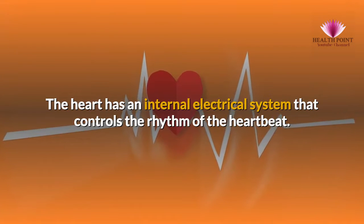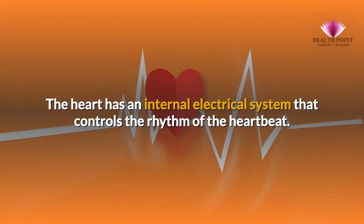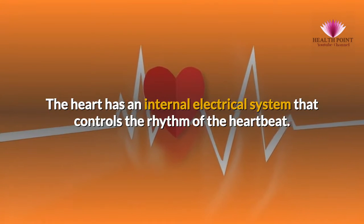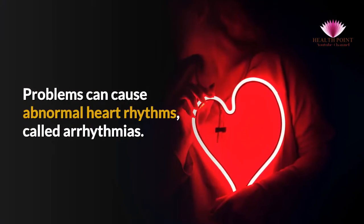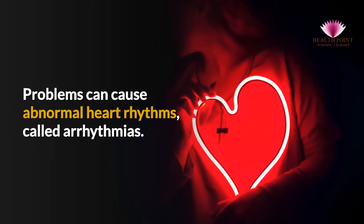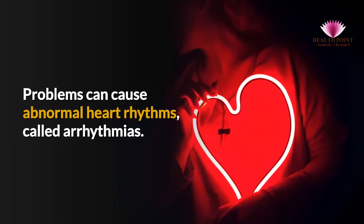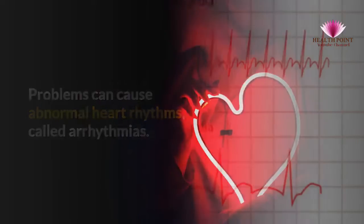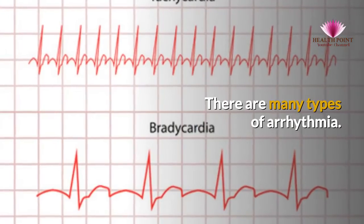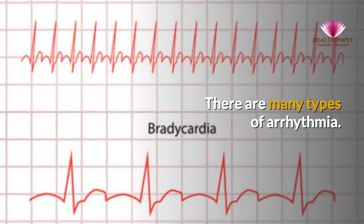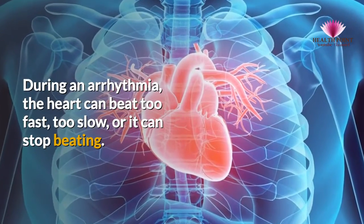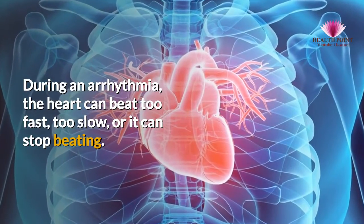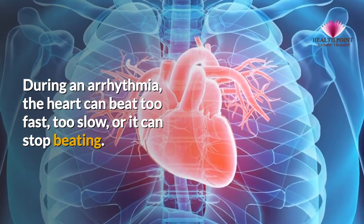The heart has an internal electrical system that controls the rhythm of the heartbeat. Problems can cause abnormal heart rhythms called arrhythmias. There are many types of arrhythmia. During an arrhythmia, the heart can beat too fast, too slow, or it can stop beating.